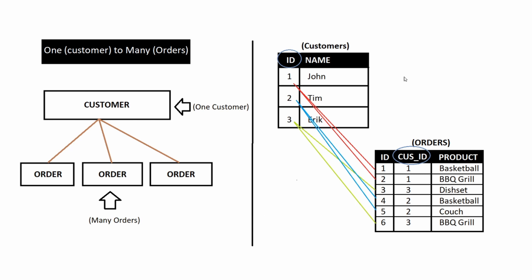In the database, this is how it's going to look. We have two tables: a customers table and an orders table. Every single time one of these customers places an order, a unique order is created, but that customer ID is referenced as a single column in the orders table. When John placed an order, his ID was referenced in the basketball order, and when John placed another order for a barbecue grill, his ID was stored again. This goes on for when Eric places an order and when Tim places an order — that's how a database stores a one-to-many relationship.